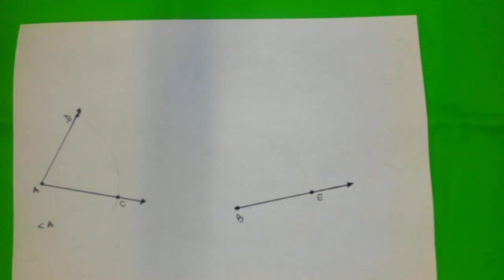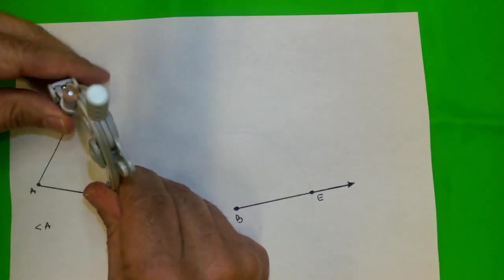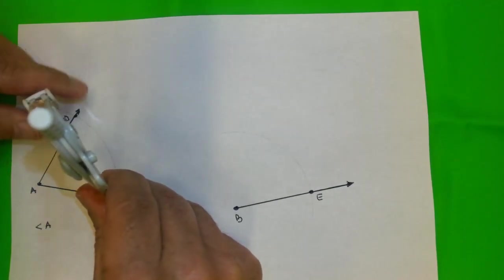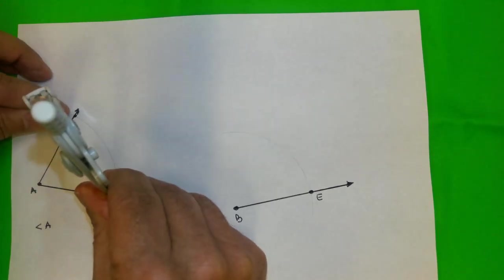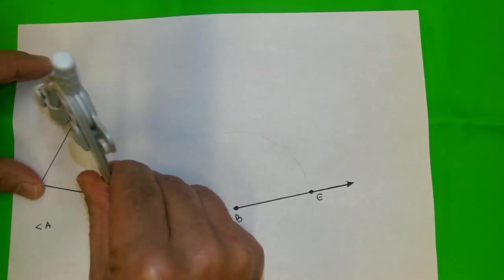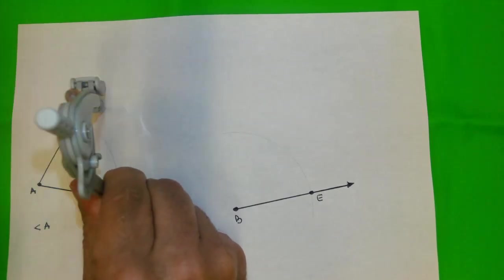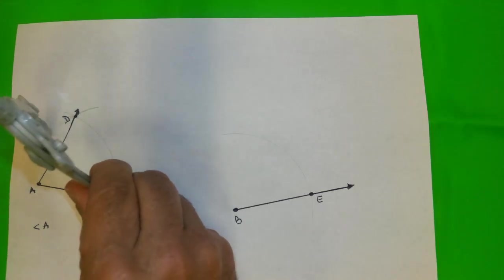And now, for getting a point like D, this point here, we're going to take the compass, put it on C, and try to get how long this segment CD is. You notice how I drew this arc one more time.